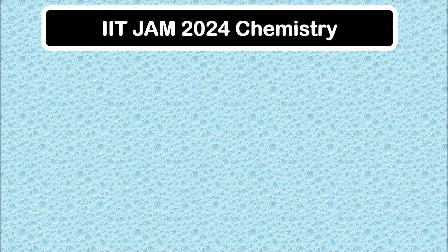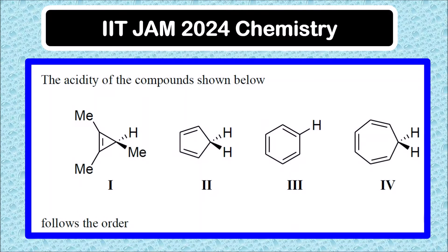Hello everyone, welcome to Chemezon Complete Chemistry. In this video, we are going to solve another question from the JAMB 2024 chemistry paper. The question is: acidity of the compounds shown below follows which order? Four compounds are given and we have to determine the order of acidity.